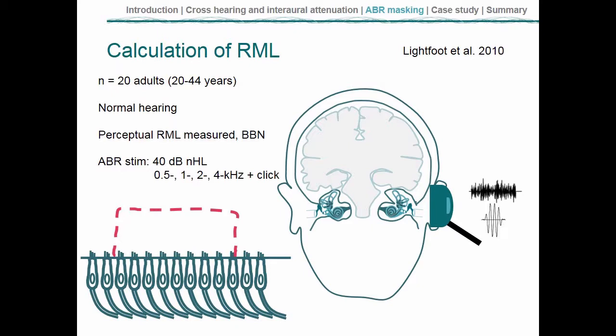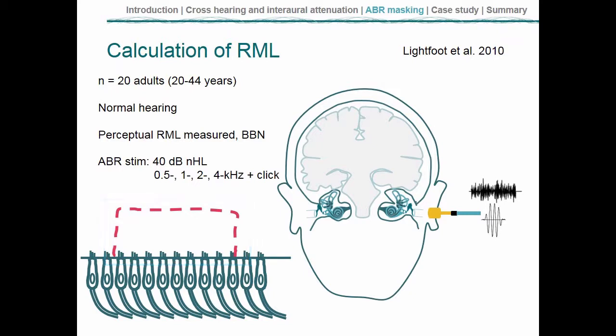Simply what they did was as follows: they took 20 normally hearing adults and used standard traditional ABR stimuli such as a click and frequency-specific stimuli such as tone pips, played into the test ear both using TDH headphones and insert headphones at a comfortable volume of 40 dB nHL. With ABR stimuli, we might have a very broad region of the basilar membrane responding — particularly with a click, which is a broadband sound.